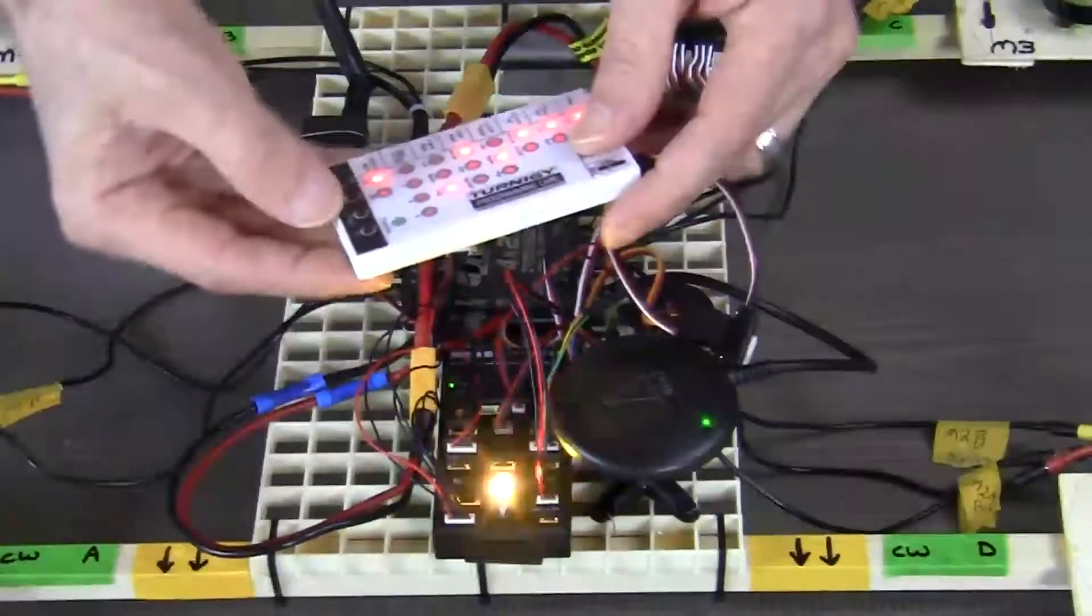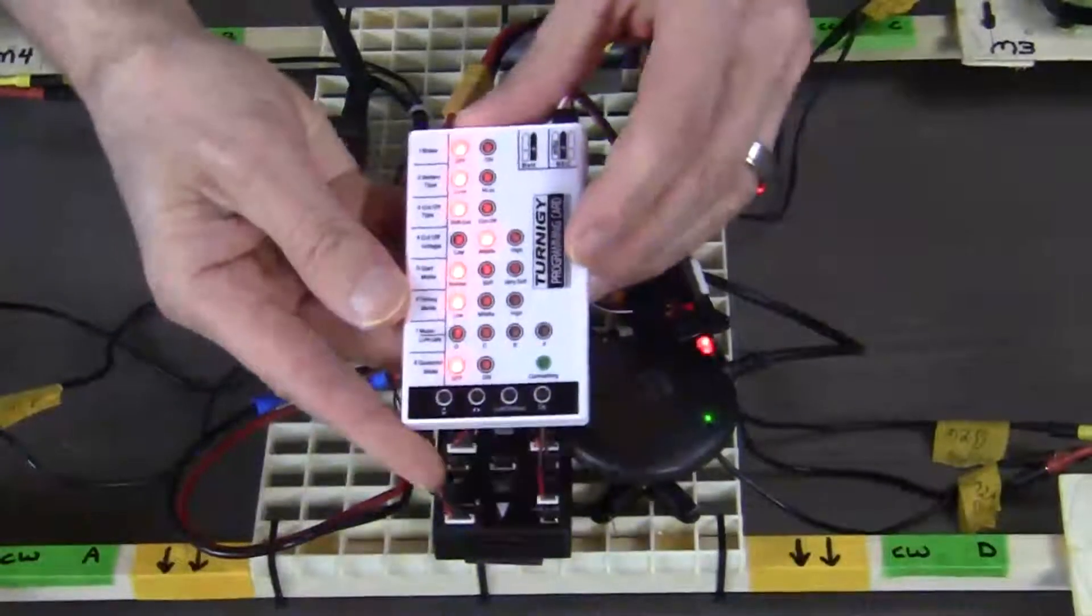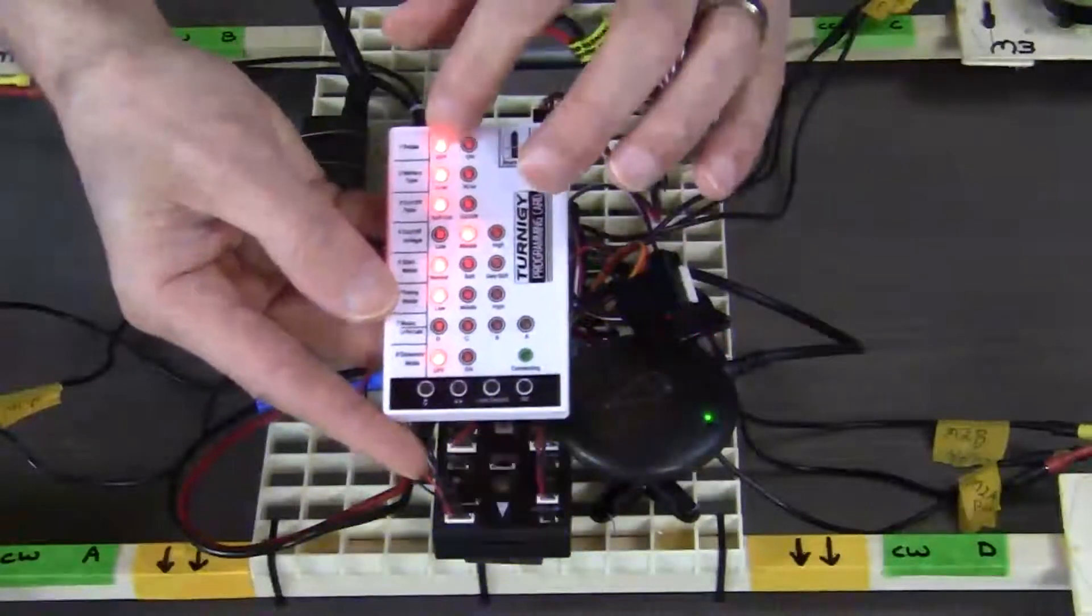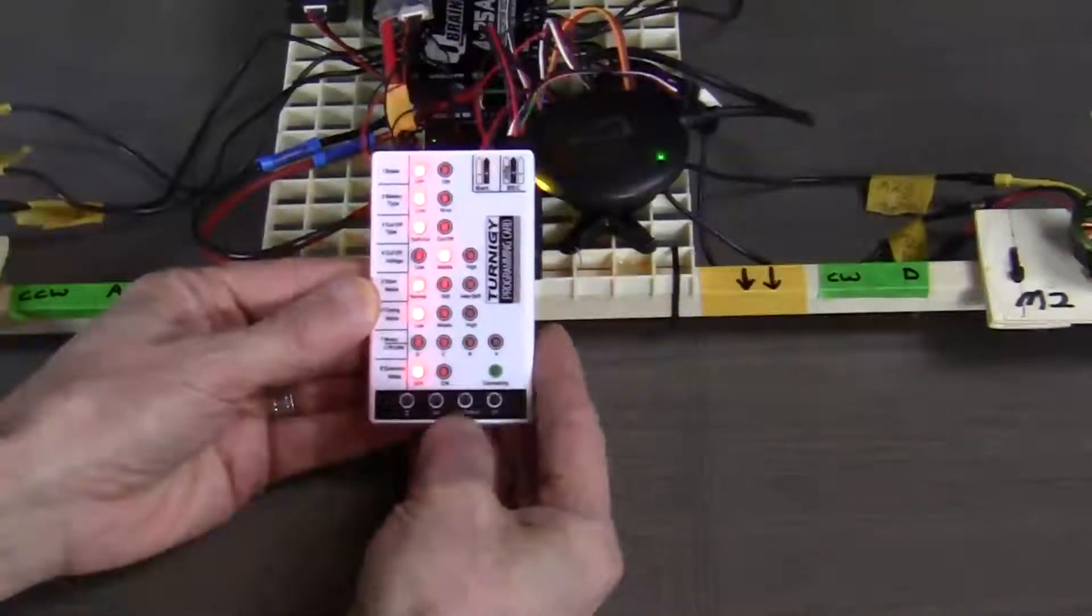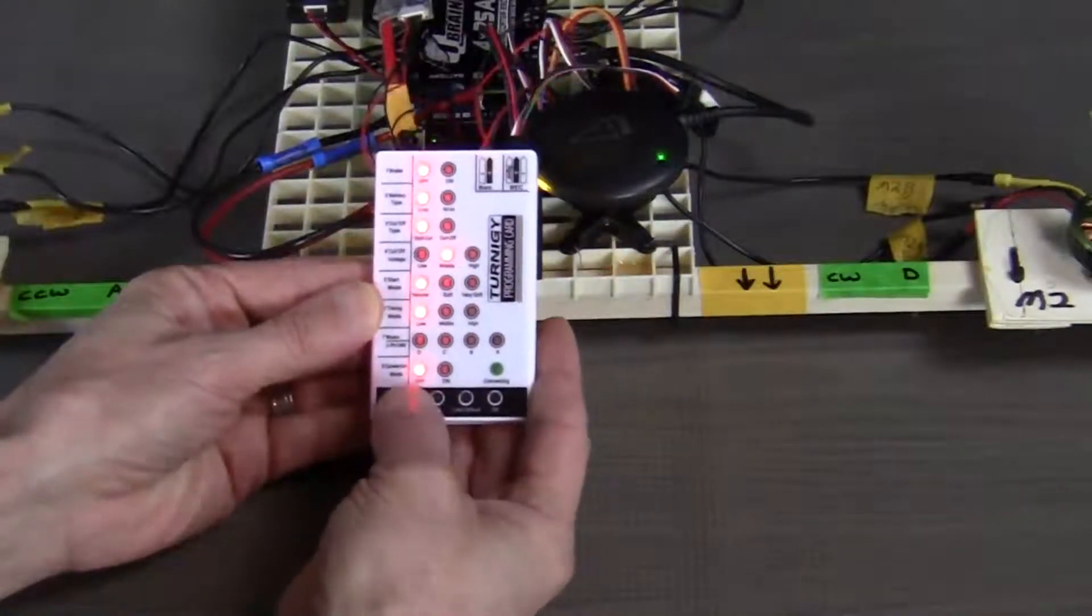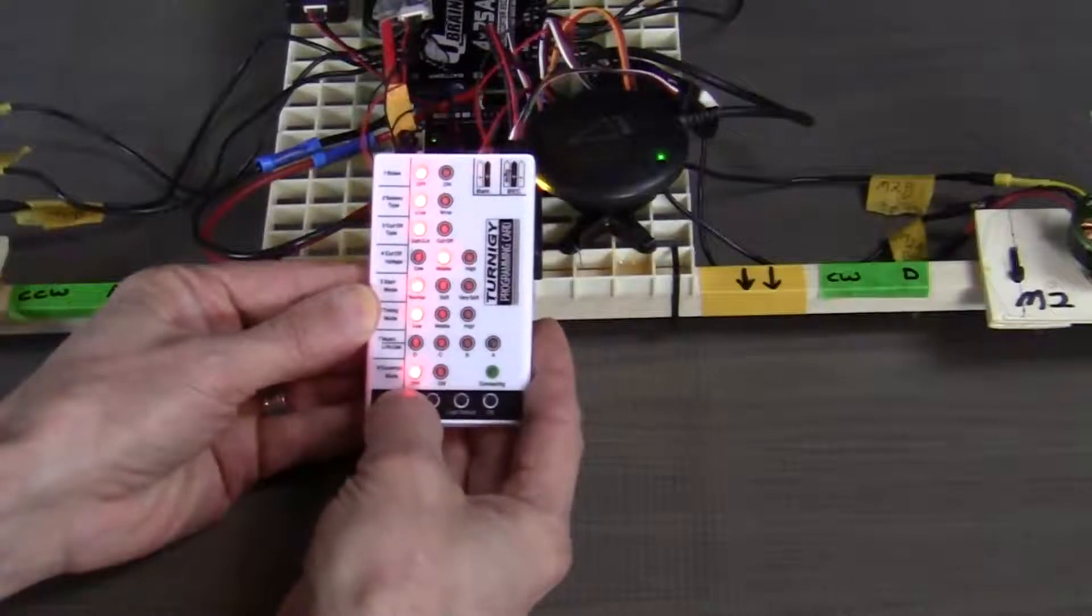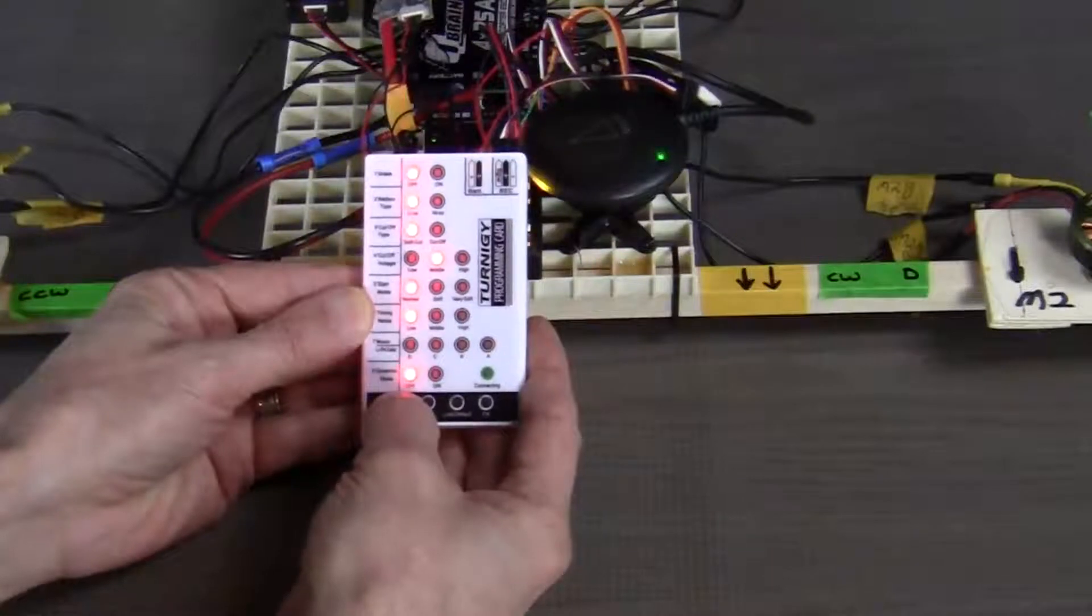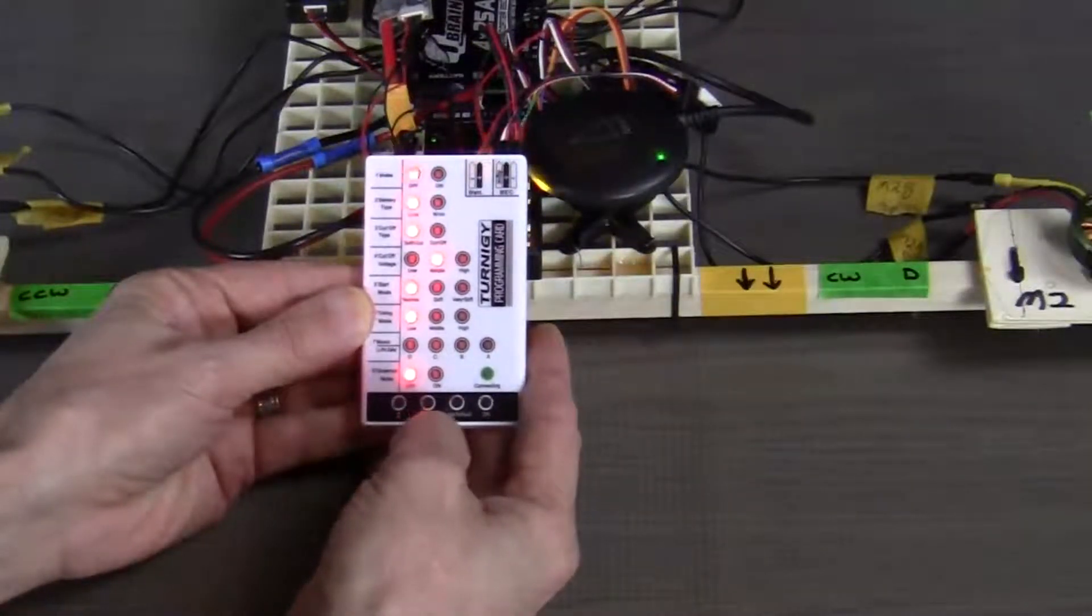With power to the system, you can see that the programming card is all lit up. Now that we have power to the programming card, let me show you how to select your items. You use the up and down arrow at the bottom of the card to cycle through your item selections, and then to move across to each option for the item, you use your left and right button.